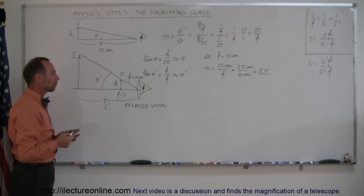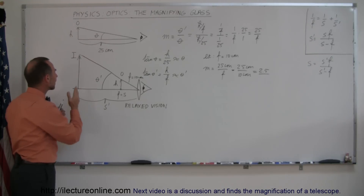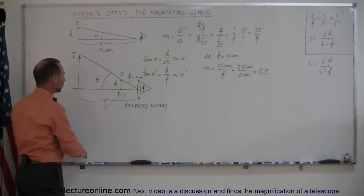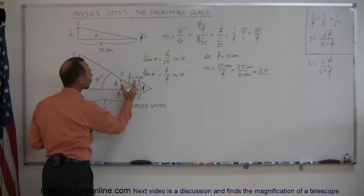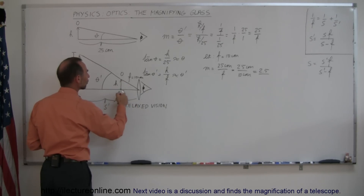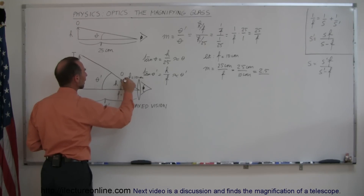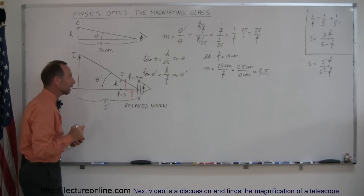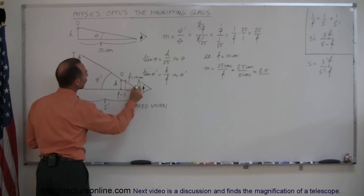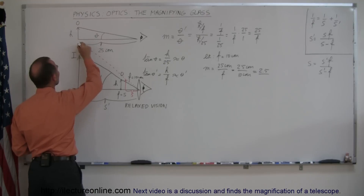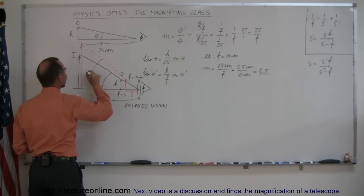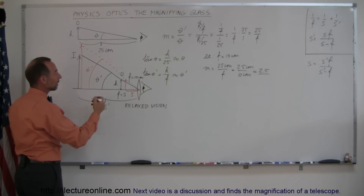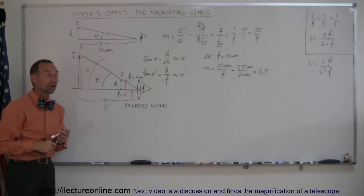What if you don't want to look at it with relaxed vision? What if you want to look at it in such a way that the image is formed right here 25 centimeters away? Then you look at it with strained vision because that image is much closer. You can accomplish that by moving the object closer to the lens, meaning farther in from the focal point, so that the object distance is now smaller than the focal length. The image formed by an object like that will now be larger, giving you a larger theta prime — so when you bring the image in closer you look with strained vision but see a larger image, therefore you have a larger magnification.